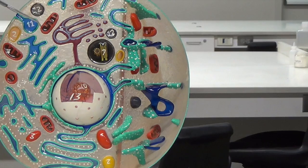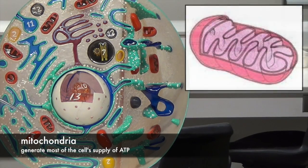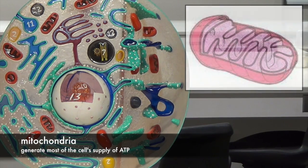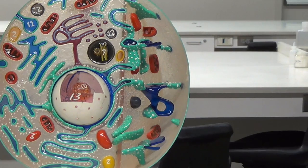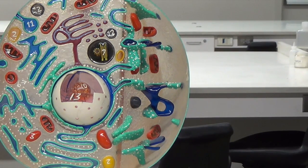These orange organelles are mitochondria and they are responsible for producing ATP. We also have some other organelles which are lysosomes and peroxisomes, but it's kind of hard to tell which ones are which, so we just want to stick with the main organelles.